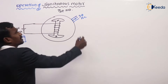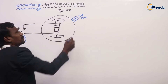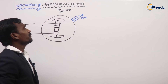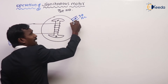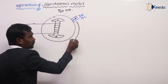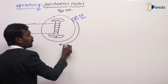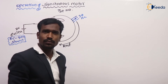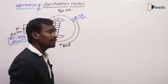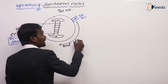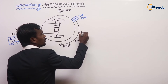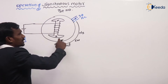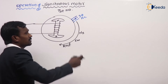Three-phase AC supply is given to the armature — the three-phase winding. When three-phase AC supply is given to the three-phase armature winding, it produces a rotating magnetic field, as I explained in the induction machine. This rotating magnetic field rotates in the clockwise direction at synchronous speed.